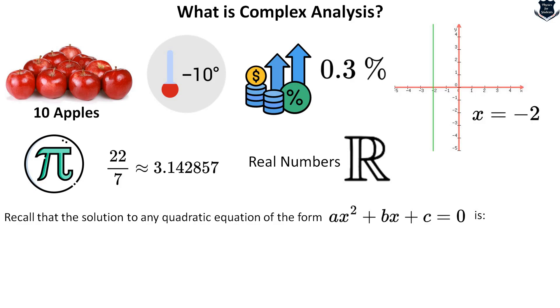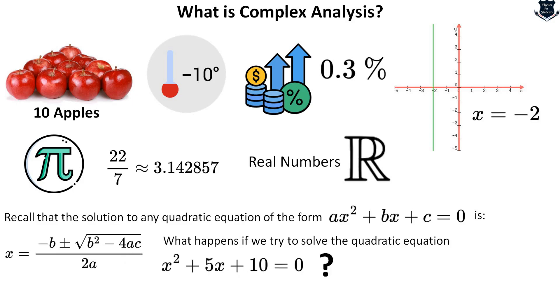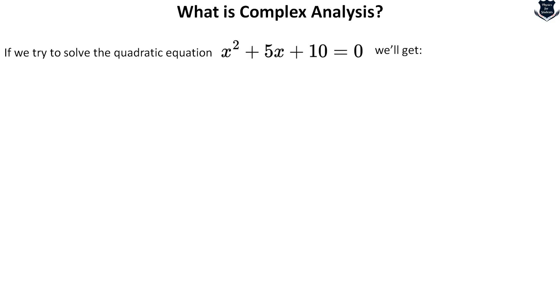If you recall from school days, the equation for the quadratic is x squared plus bx plus c, with the solution minus b plus minus square root of b squared minus 4ac by 2a. Now what happens if we try to plug in x squared plus 5x plus 10 equals 0? If we try to solve this equation we get something like this.